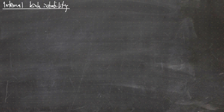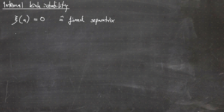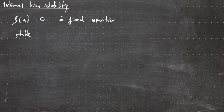For the internal kink instability, we set the separatrix to be fixed, meaning we set the perturbation psi at position 'a' to be zero, which is the same as saying we have a fixed separatrix. Applying the energy principle, we find that such perturbations of the inside of the plasma are generally stable for mode numbers m being larger than one.